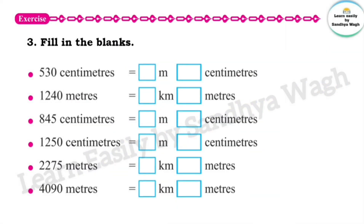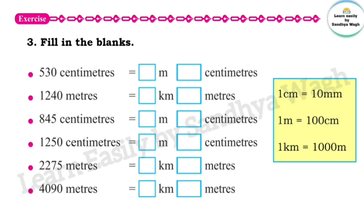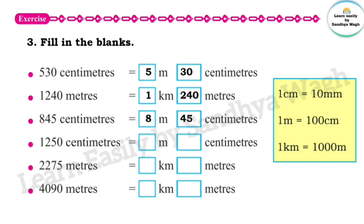Now the next question: fill in the blanks. 530 cm contains 5 meters and 30 cm. 1240 meters contains 1 kilometer and 240 meters. 845 cm contains 8 meters and 45 cm.